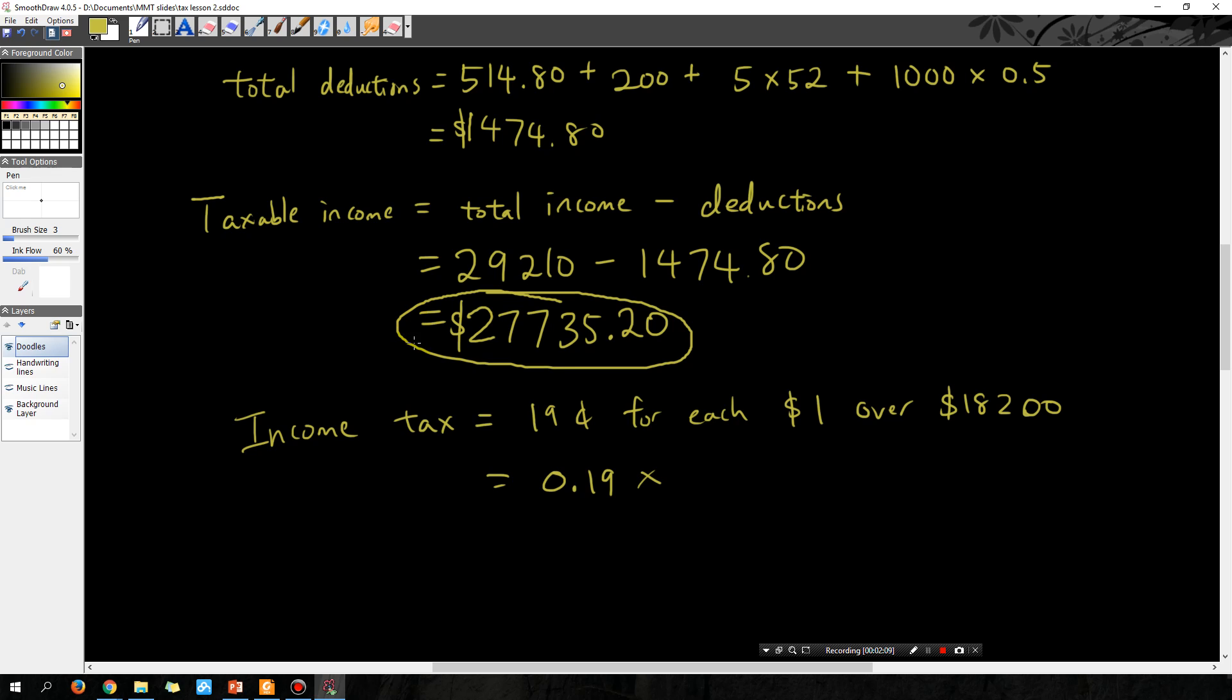So how many dollars is our taxable income over $18,200? So let's calculate it. $27,735.20 minus $18,200 - that tells us how many dollars we have over the threshold.